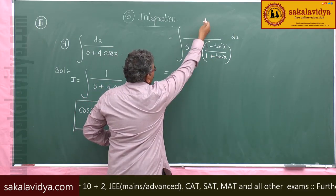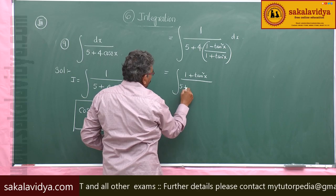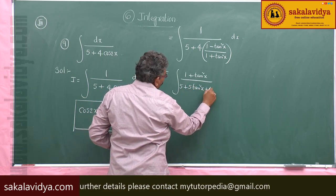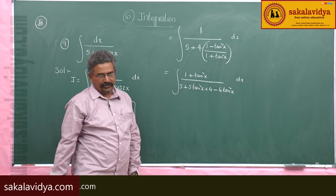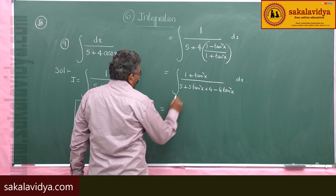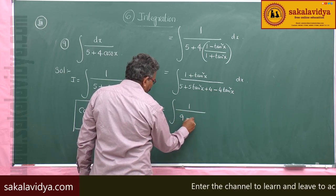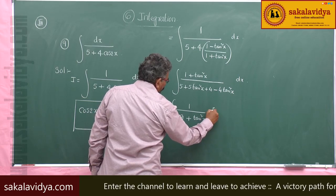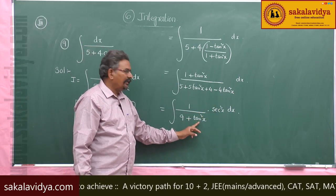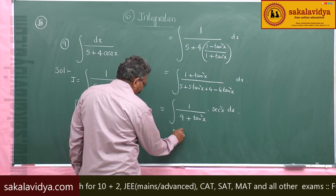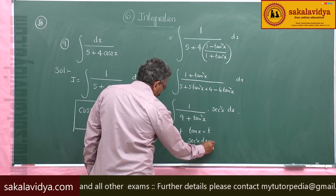So this can be written as integral of (1 + tan²x) by (5(1 + tan²x) + 4 - 4 tan²x) dx, which simplifies to integral of (1 + tan²x) by (9 + tan²x) dx. Now, 1 + tan²x = sec²x. Put tan x = t, then differentiating, sec²x dx = dt.